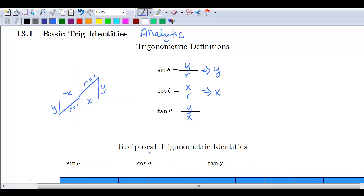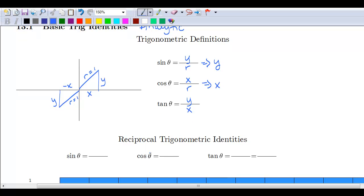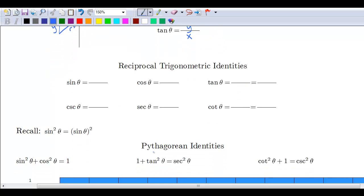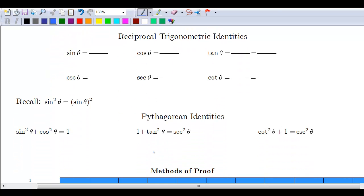The reciprocal trig identities—just a refresher, you should have seen these in previous courses. Sine is the reciprocal of cosecant. We talked about this in section 12.3 when we were dealing with graphing secant and cosecant. Cosecant would be the reciprocal of sine. The theta has to go with this because we're always acting on an angle.